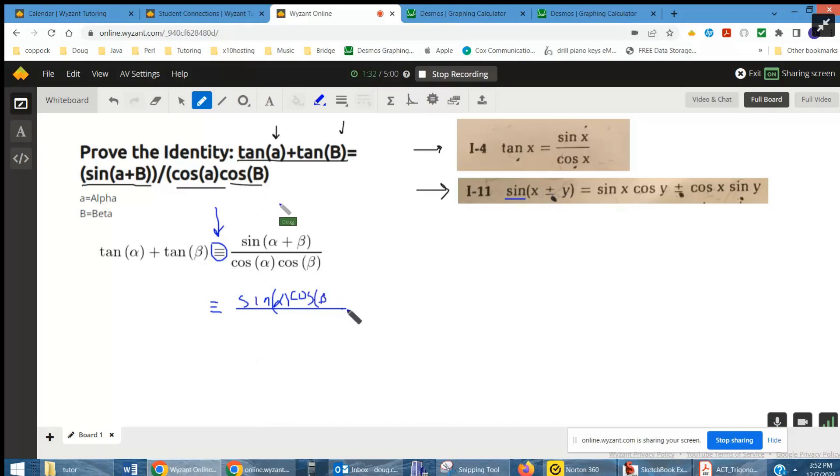plus—see, both pluses are on top—cosine of the first angle times sine of the second angle, beta. And that's still over cosine alpha, cosine beta.